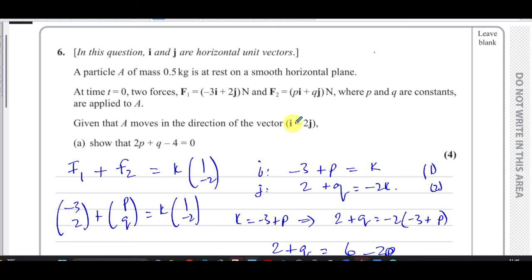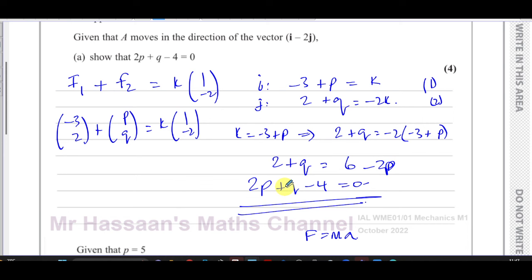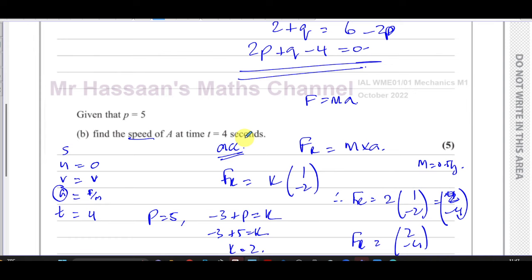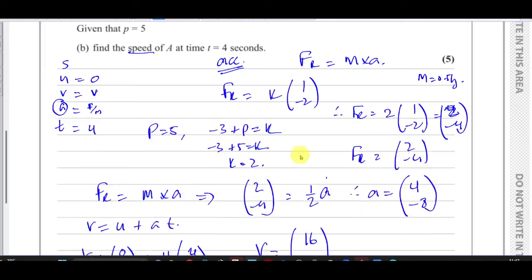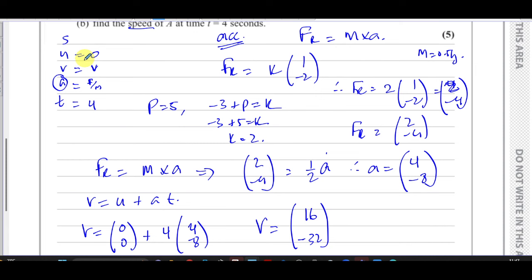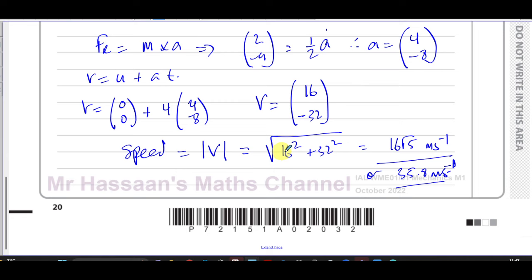So these were the forces acting on the particle. That was the direction it was moving in, so the resultant force must be also in that direction. The resultant force is some constant times that direction, and that's how we found p and q. Then we wanted to find the speed of the particle after 4 seconds, so we needed its acceleration. To find the acceleration, we needed to find the value of k using the fact that p equals 5. If we know the force, we know the acceleration. If we know the acceleration, we can use the SUVAT equations to find the final velocity. And the final velocity is not the answer. We want the speed, so we have to find its magnitude. All those steps are very important for answering this question.